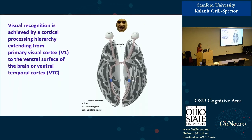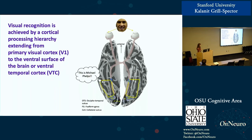I'm interested in studying how the brain achieves visual recognition. Visual recognition is achieved by a cortical processing hierarchy extending from early visual cortex all the way down to the ventral surface of the brain, or ventral temporal cortex. Light gets reflected from a face into your eye, images form on your retina, information is relayed through the optic nerve to the LGN, then to V1, and through a series of processing stages across retinotopic regions, information reaches the ventral temporal cortex, spanning the collateral sulcus, fusiform gyrus, and occipital temporal sulcus — and you recognize this as Michael Phelps.